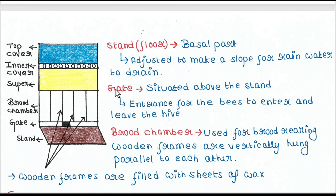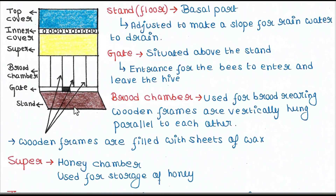So we will see the image and the parts of the hive. First is the stand or floor — this is basically the basal part of the hive, adjusted to make a slope for rainwater to drain. Next is the gate, situated above the stand. This is the entrance for the bees to enter and leave the hive.